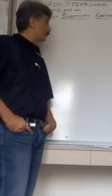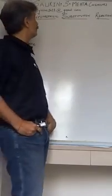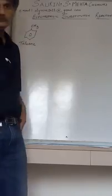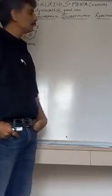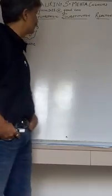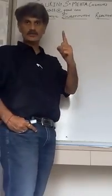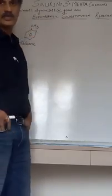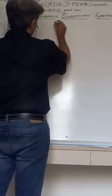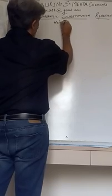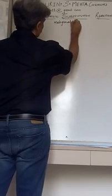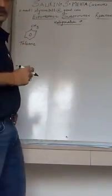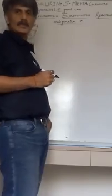Hello dear students, we are back once again with electrophilic substitution reactions of toluene. Today we will take one more electrophilic substitution. We have already covered nitration and sulfonation; now we are going to take the third one, which is the halogenation reaction of toluene. In halogenation we can include two reactions: chlorination and bromination.